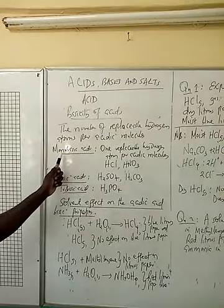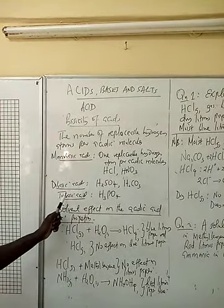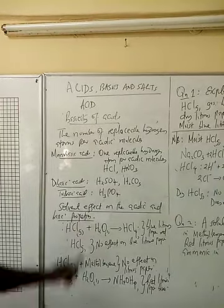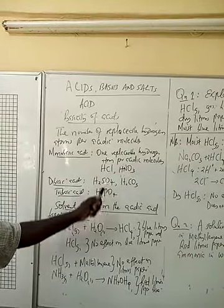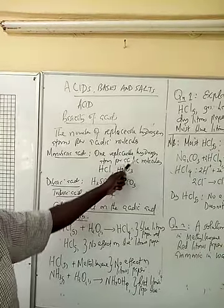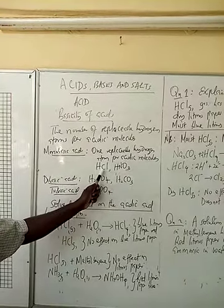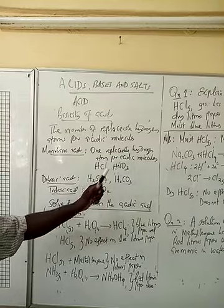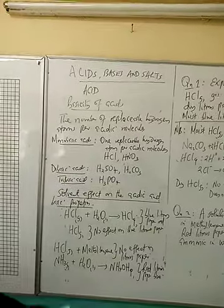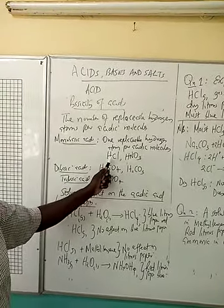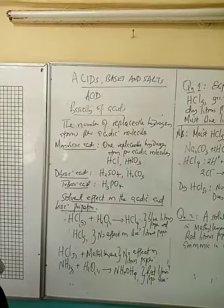We have got monobasic acids, dibasic acids and tribasic acids. Monobasic acids are the simple acids which have got one replaceable hydrogen atom per acidic molecule. We have got hydrochloric acid and nitric acid as examples. They will only replace one hydrogen — if they react with a metal, only one hydrogen will be replaced from the acidic molecule.